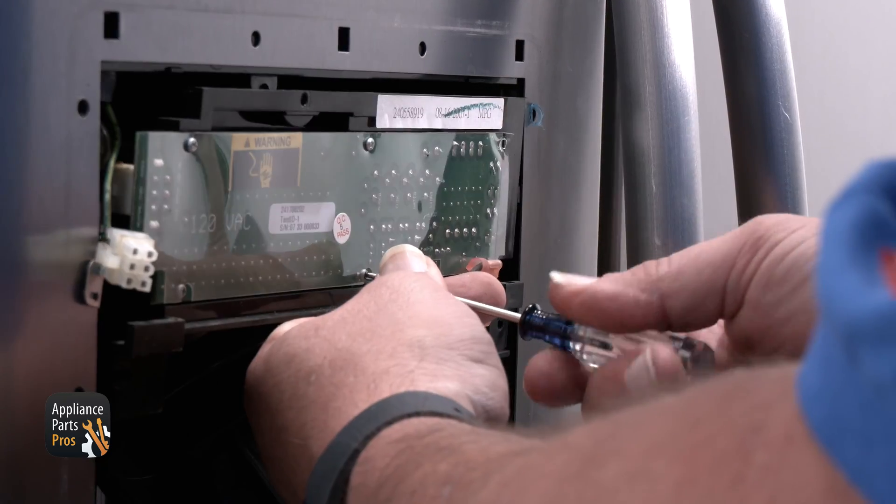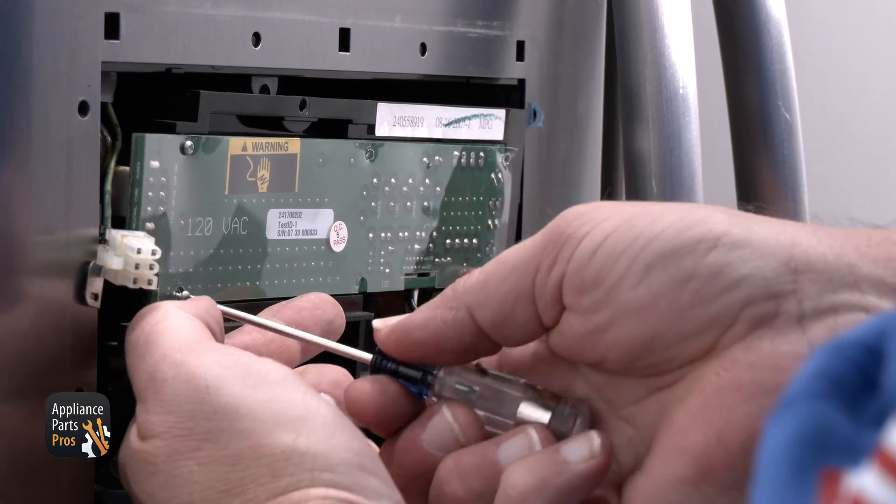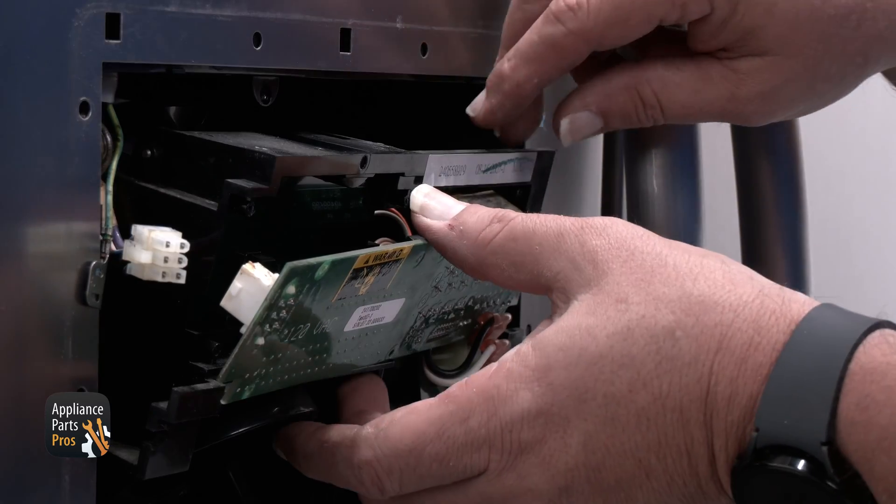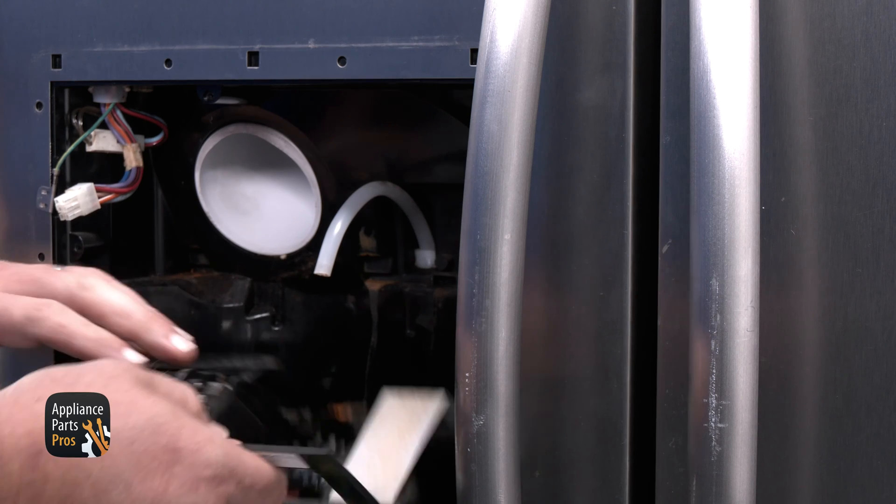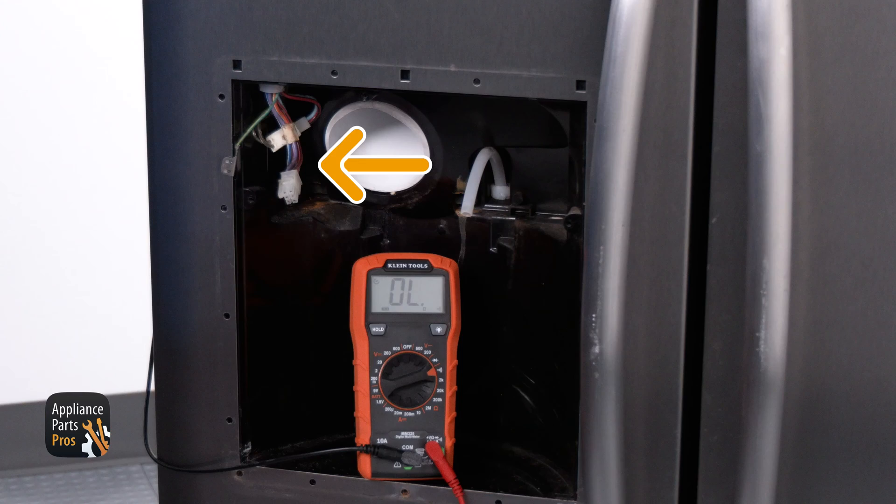Then remove the six Phillips head screws holding the control board in place. Once it's loose, reach behind the housing and disconnect the water supply line. Now we have access to the wiring in the dispenser, but we also need to access the wiring at the top of the door.